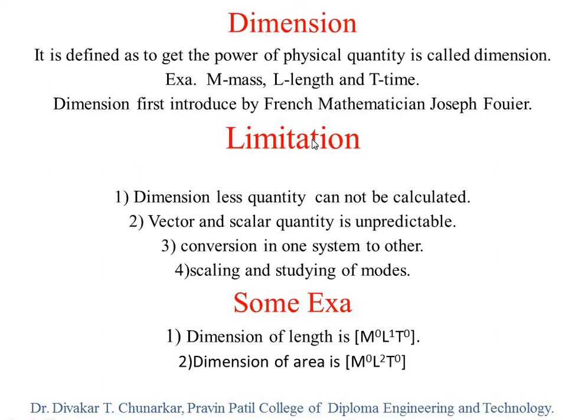Now the limitations of dimension: number one, dimensionless quantities cannot be calculated. Second, vector and scalar quantities are unpredictable using dimensional analysis. Third, conversion from one system to another system is also a limitation. Scaling and studying of models was previously explained.